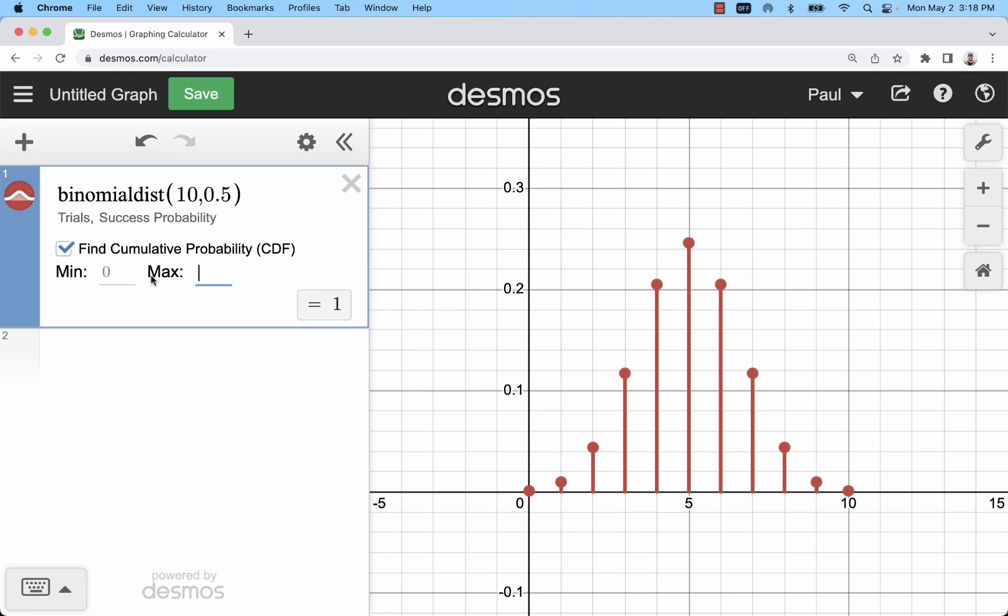If I want to go from 4 up to 10, I would type 4 in the minimum box instead, and you can type something in both. You can see that the graph is going to adjust as you go.